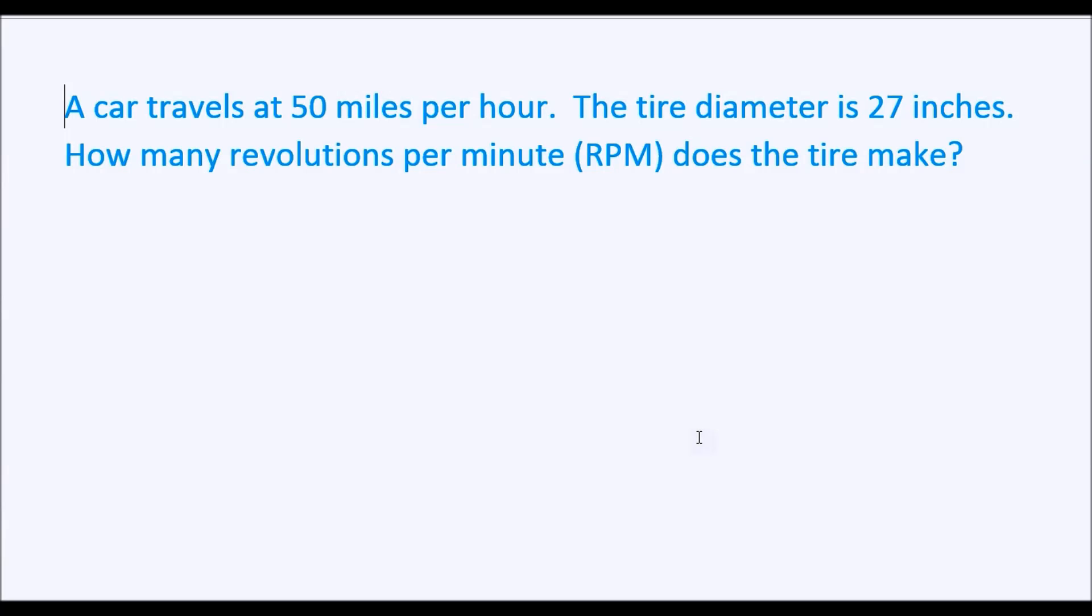A car travels at 50 miles per hour. The tire diameter is 27 inches. How many revolutions per minute does the tire make?